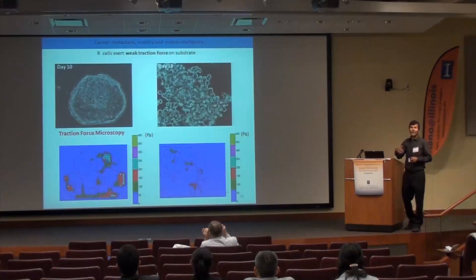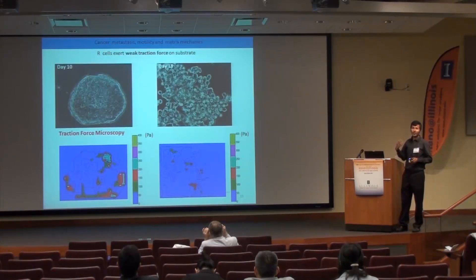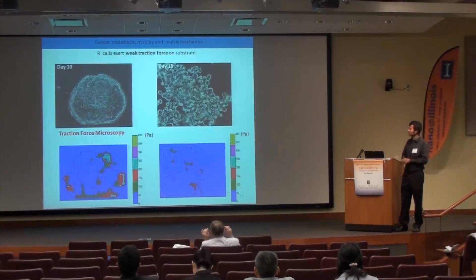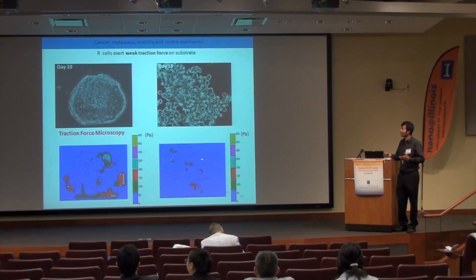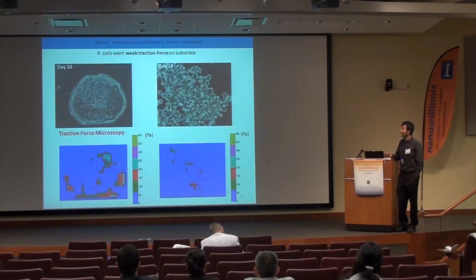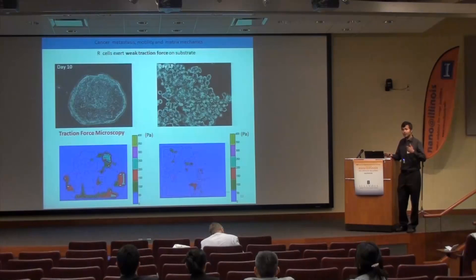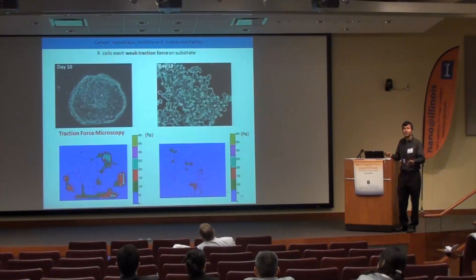R cells are also mechanistically different. Traction force microscopy of E-cells and R cells on the same stiffness polyacrylamide gel shows that R cells generate very weak traction forces compared to parent E-cells on similar stiffness substrates. This gives us an idea that R cells might lack mechanosensitivity on 2D substrates.